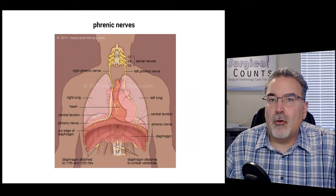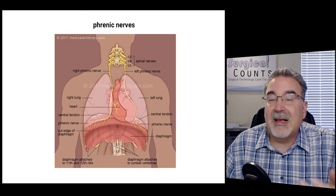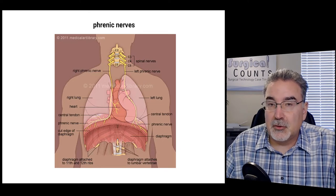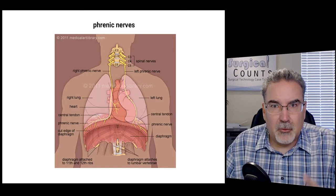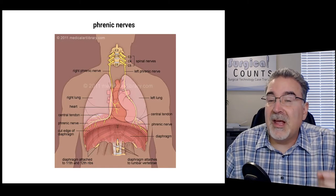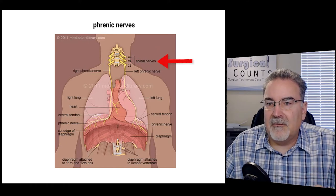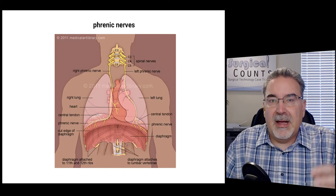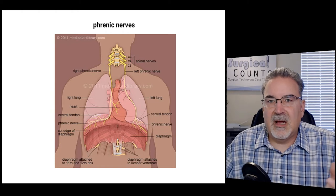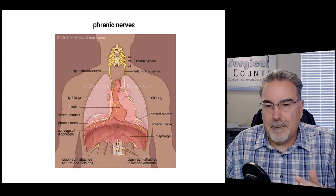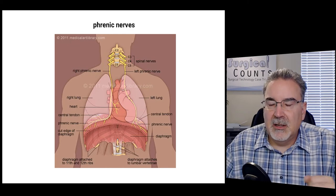The diaphragm is controlled by phrenic nerves — the name comes from the same root as diaphragm. Phrenic nerves are not one of the 12 cranial nerves, but they are spinal nerves coming out of C3, 4, and 5. They run down to the diaphragm and cause it to contract and relax. The diaphragm attaches to the chest wall all the way down to that last rib.